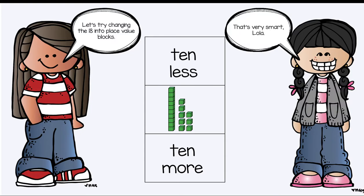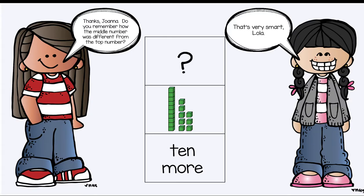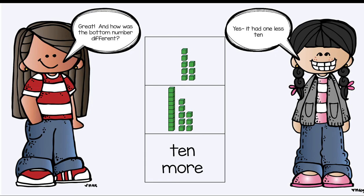That's very smart Lola. Thanks Joanna. Do you remember how the middle number was different from the top number? Hmm. Yes. It had one less 10. So we took away a 10 stick and we have eight ones. Great.